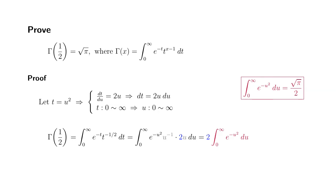So you're going to have 2 times square root of pi over 2, and then you can see that the 2 cancels out. You're going to get square root of pi. Therefore, gamma of 1 half is equal to square root of pi.